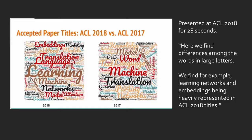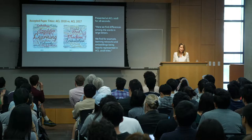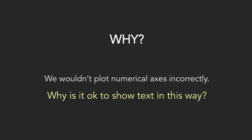My final example was presented at the ACL Conference on Computational Linguistics — shown for 28 seconds. It was accepted paper titles from one year versus the previous year. We find differences among words in large letters — for example, learning, networks, and embeddings heavily represented in ACL 2018 titles. But bigrams are not shown together, so we can't see 'learning networks.' I'm wondering if you can see the difference between 2018 and 2017. Can you see the small words? Which words are different and by how much? I've given you way more than 28 seconds. So, we wouldn't plot numerical axes incorrectly — why is it okay to show text this way?